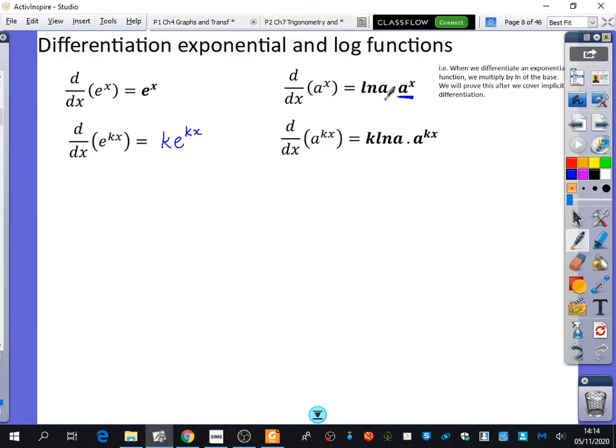We are going to prove this after we cover something called implicit differentiation. For now, you just need to take my word for it. If you have something to the power of x, it will also differentiate to something to the power of x, but also with the ln a there. The same rule will apply as we had here when you had the kx, you would also have the same as above, but you'd also multiply by k as well.